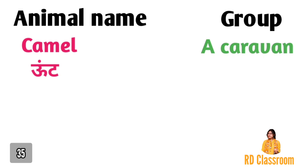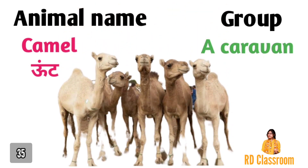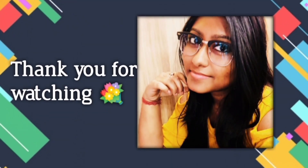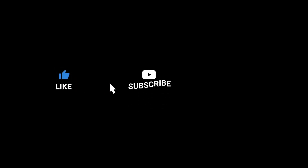Number thirty-five is camel, ya fir oont, jiske group ko kaha jata hai a caravan.